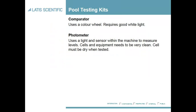There are two ways of doing it for the check testing. There's a comparator which uses a colour wheel. They're fairly simple and easy to do, but you need the wheels to be very clean and also need good natural light. You can get a massive variance in the reading you've taken for alkalinity compared to in natural light, so there is very much human error involved in that.